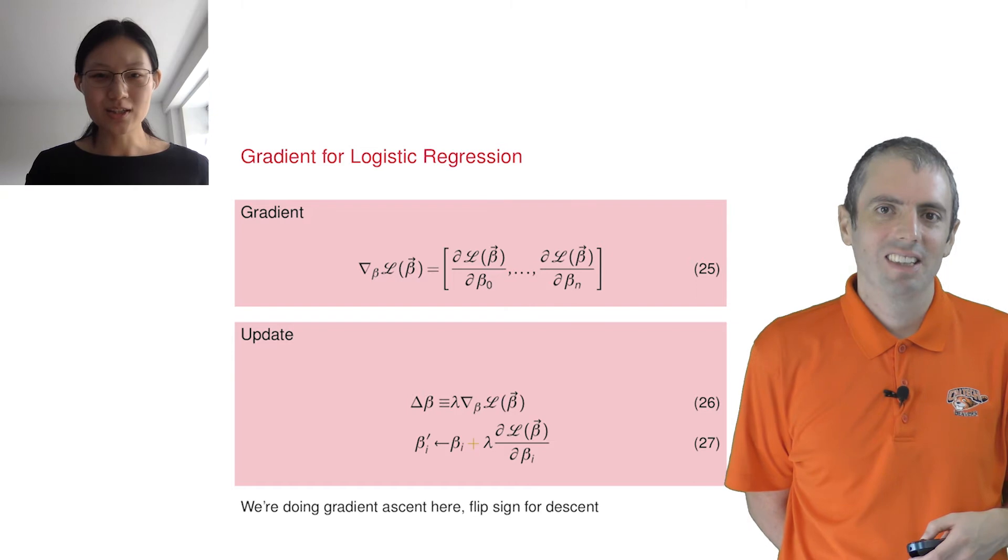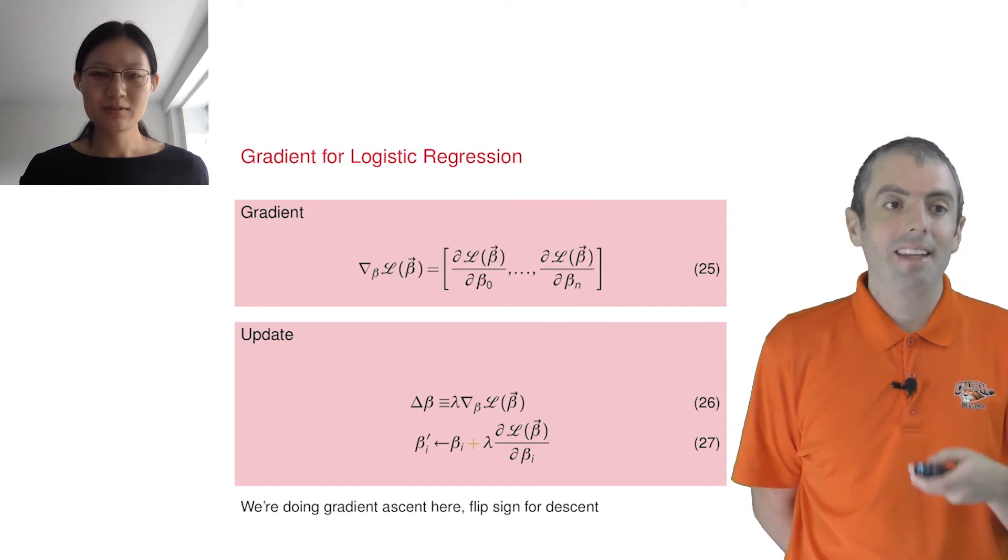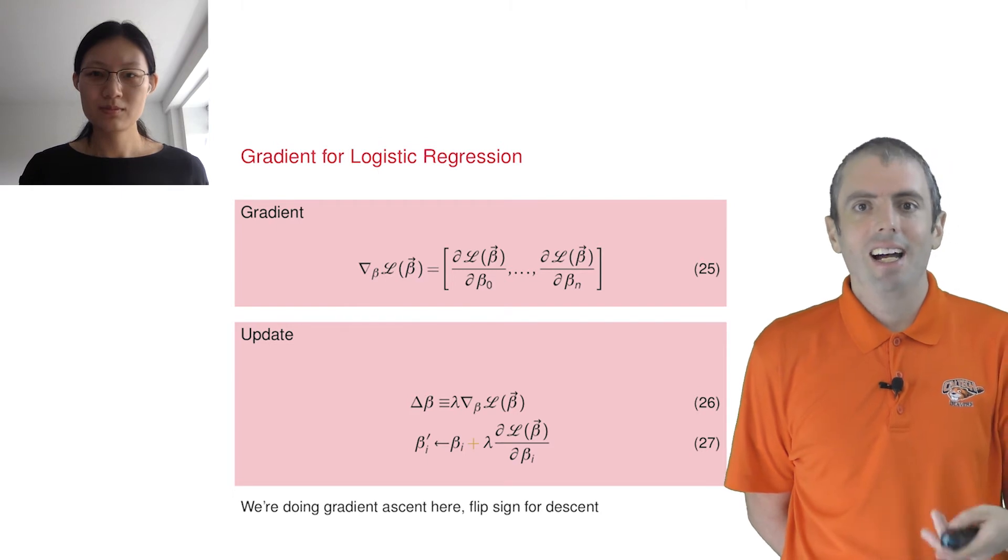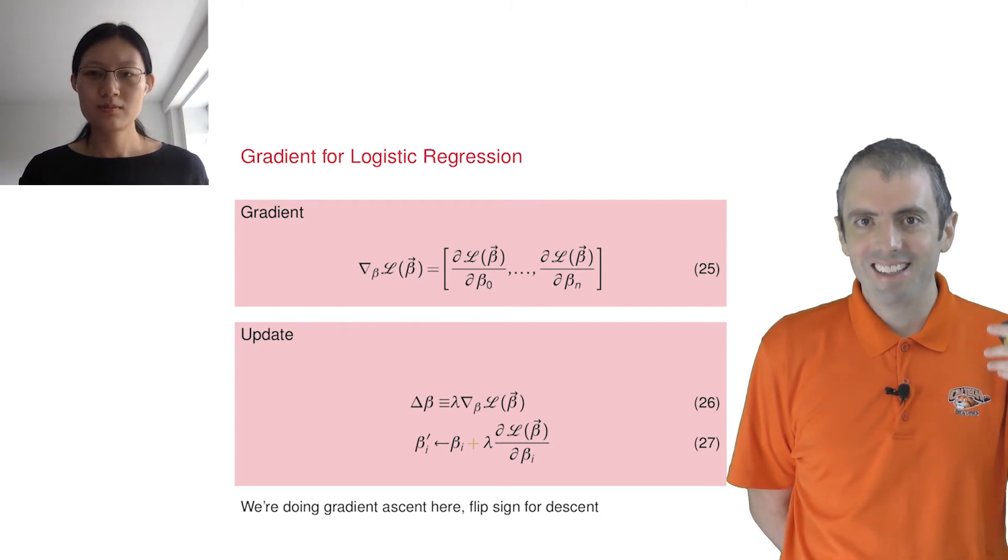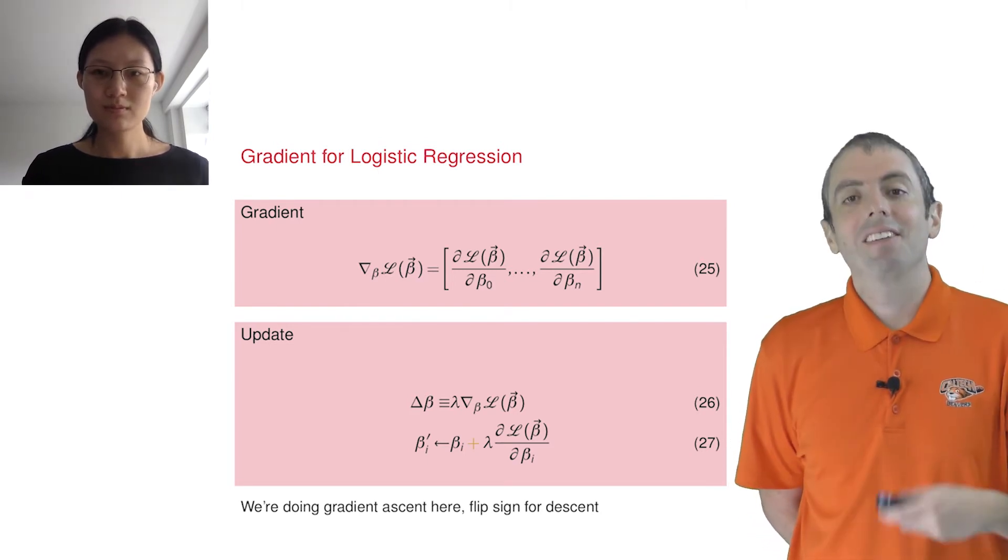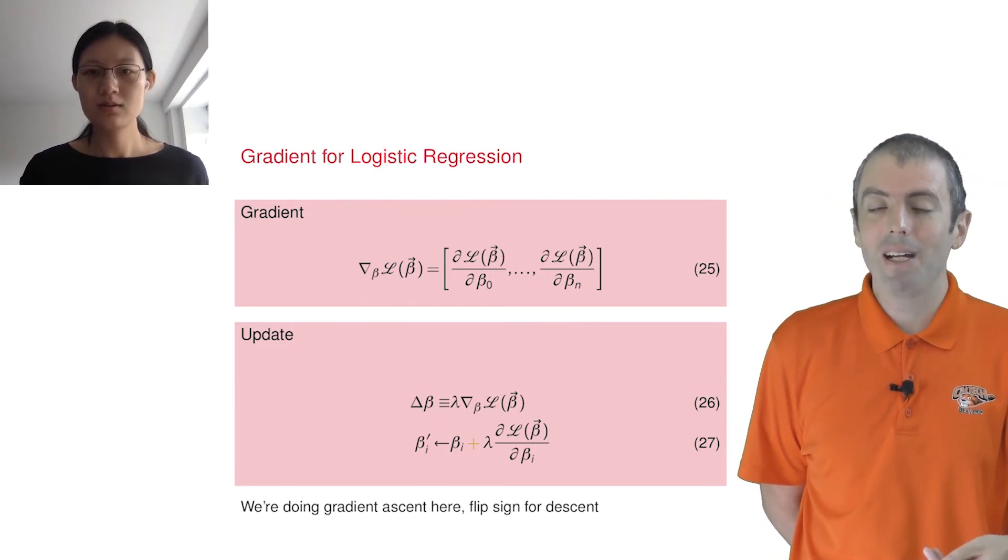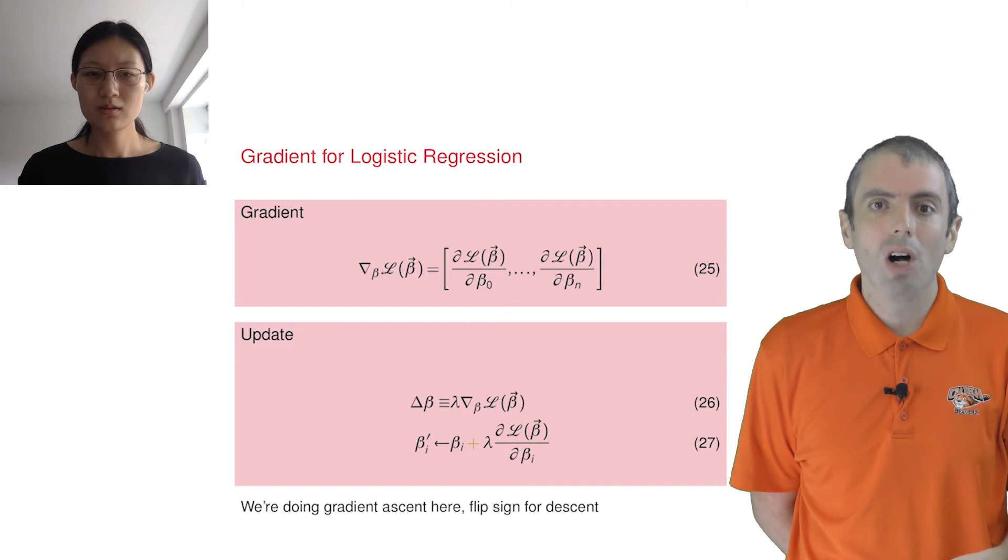So are you doing gradient descent? Right. And that's why we're adding the gradient in. If we were doing gradient descent, we would subtract this out. And sometimes people say that they're doing gradient descent even on logistic regression by taking the negative log likelihood.